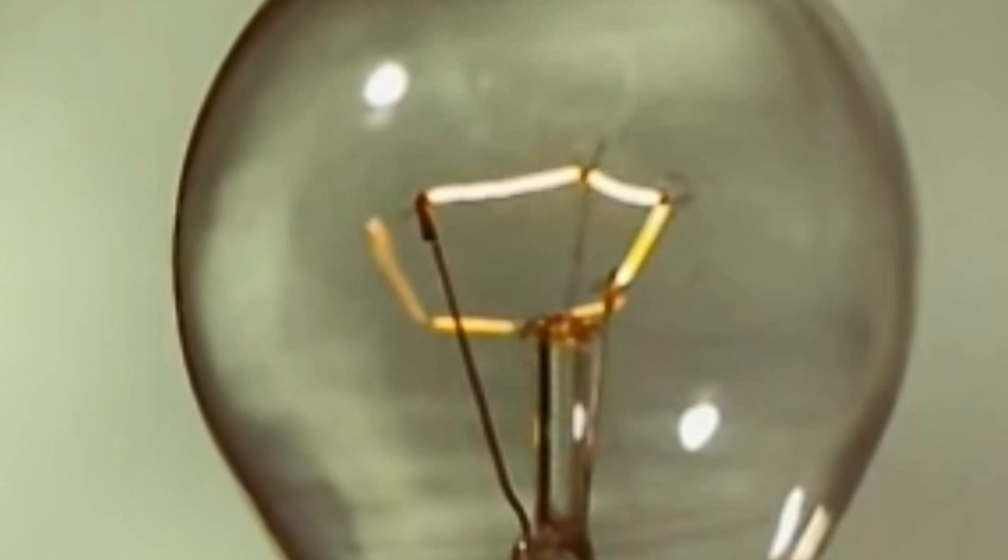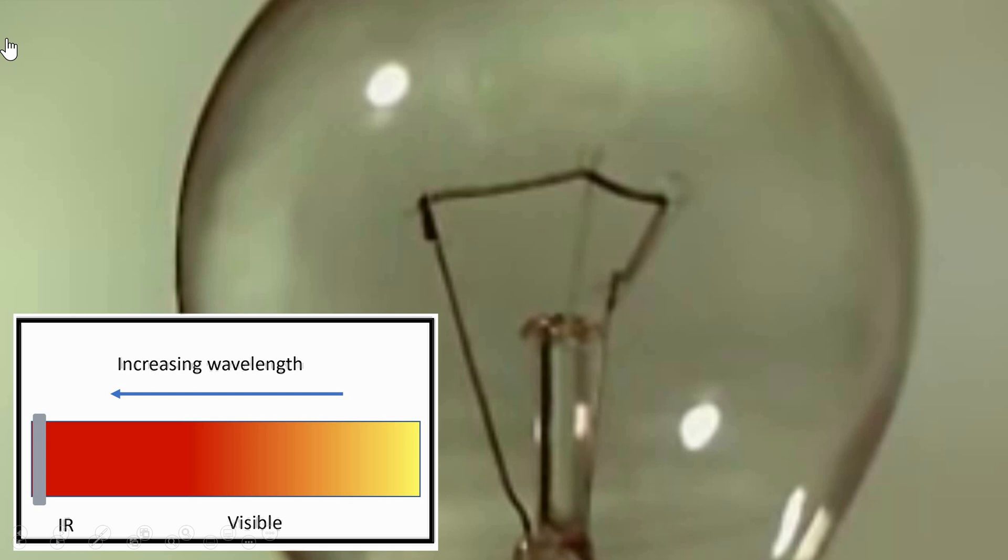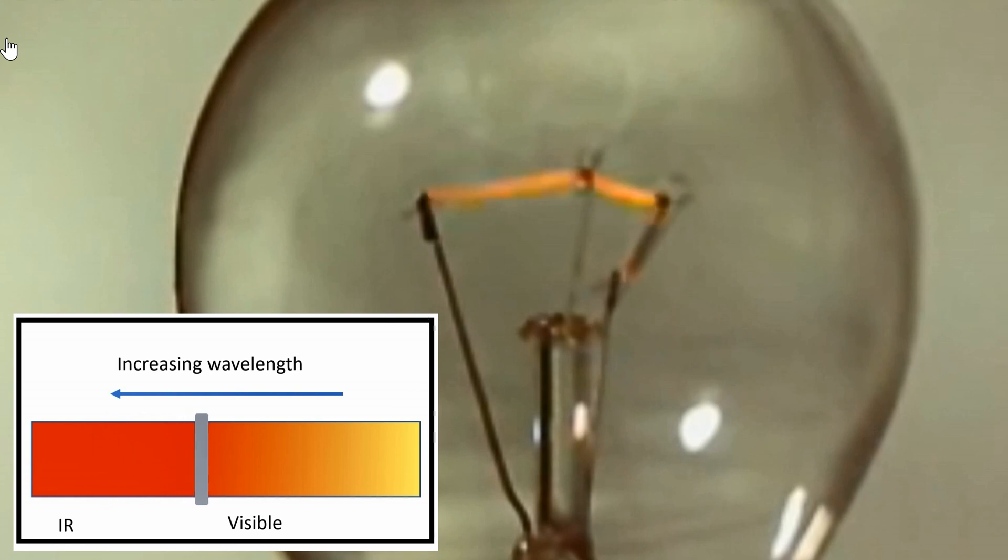And if we could imagine this but viewing the wavelength that it's emitting at, when I flick the switch, initially as it heats up it's emitting in the infrared. I can't see those wavelengths, but as it gets hotter, the wavelengths that it emits at become shorter, therefore they go into the visible range.